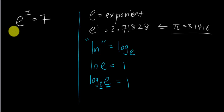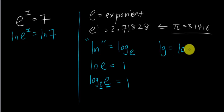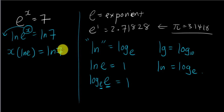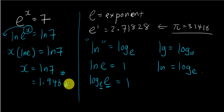For example: e^x = 7. I add ln to both sides, giving ln(e^x) = ln(7). Using the log power rule, I move x to the front: x · ln(e) = ln(7). Since ln(e) = 1, I get x = ln(7). You can leave your answer as ln(7) or use a calculator to get approximately 1.946.